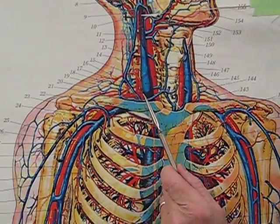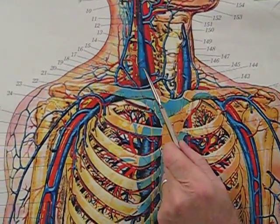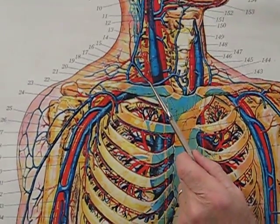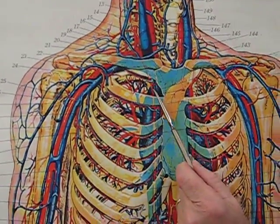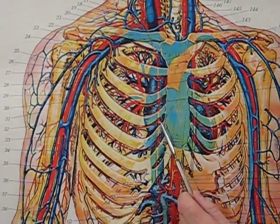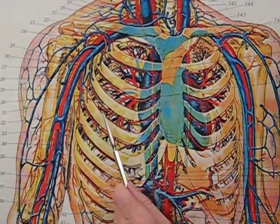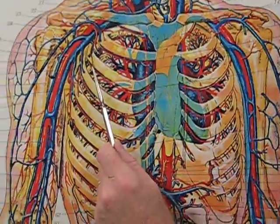We have a thyrocervical artery here, which kind of makes a T. We have an internal thoracic artery that travels posterior to the clavicle, runs down lateral to the sternum, giving off the anterior intercostals that go to the anterior intercostal spaces.